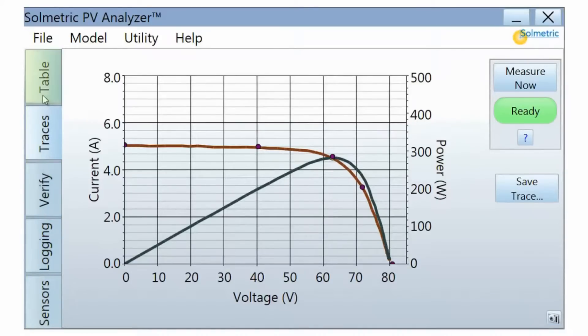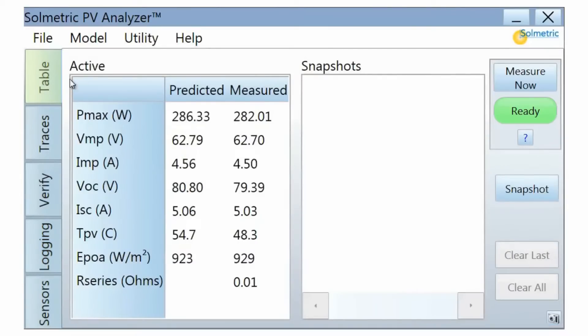The Table tab lists two columns of key PV performance parameters. One column lists the measured values, and the other column lists the values predicted by your PV performance model. In addition, measured and predicted temperature and irradiance are shown.